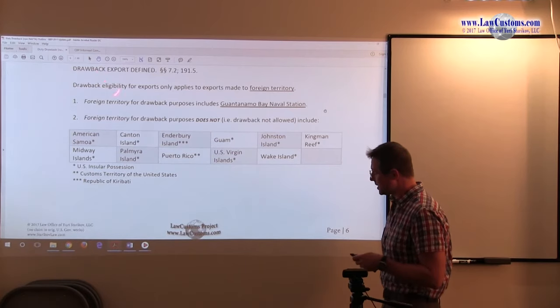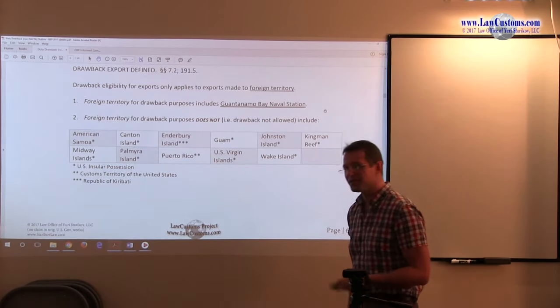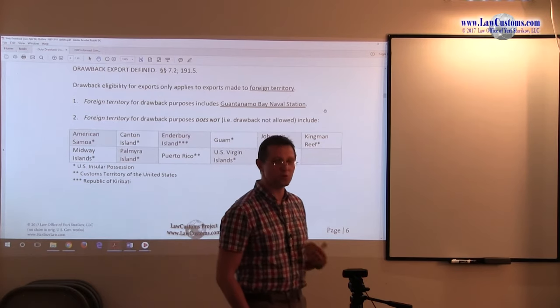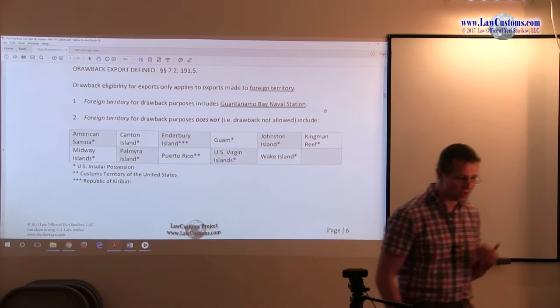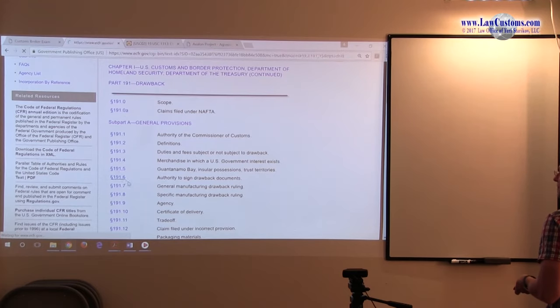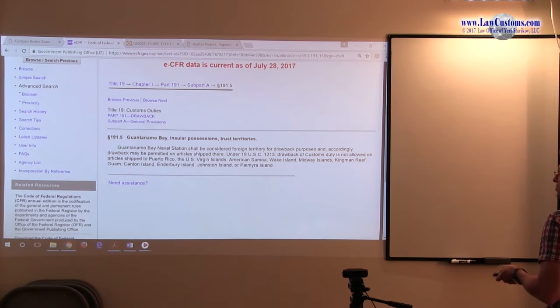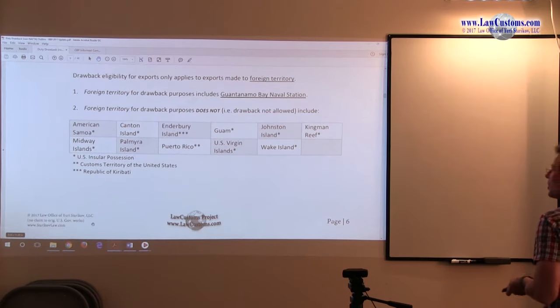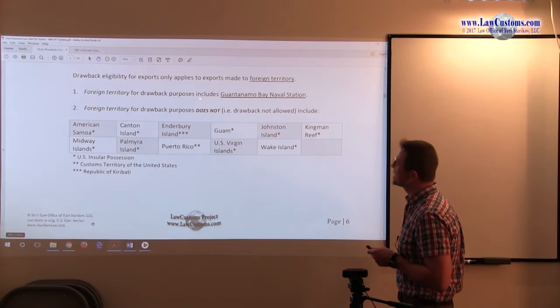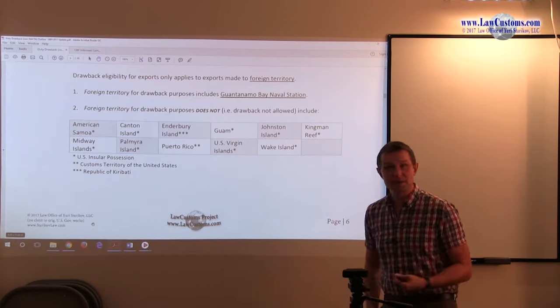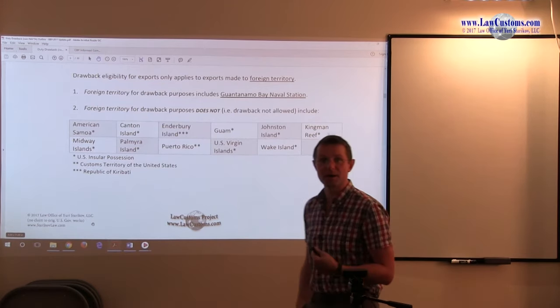Drawback kicks in if it goes out of the foreign territory. When you see the word foreign territory abbreviated as such, it implies it's a term of art. You have to have a definition for that particular foreign territory. The definition for the foreign territory is found for the drawback purposes in section 199.5, which provides a list of foreign territories to be used. Number one to remember is foreign territory for drawback purposes includes Guantanamo Bay Naval Station. So if the stuff goes out to Guantanamo Bay, this means that the drawback is applicable.